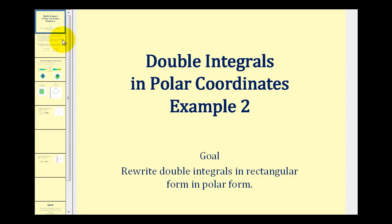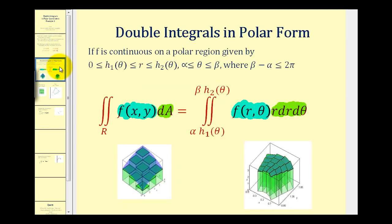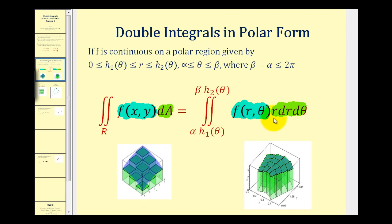Welcome to a second example of converting a double integral in rectangular form to polar form. As we discussed in the previous video, to convert a double integral in rectangular form to polar form, we have to convert the function f(x,y) into a function in terms of r and theta, and then the differential dA is replaced with an extra factor of r dr dθ. We can't forget about this extra factor of r when converting to polar form. Let's take a look at our second example.